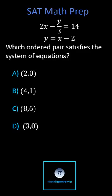Which ordered pair satisfies the system of equations? This means which ordered pair satisfies both the first and second equation. Recall each ordered pair is in the form of x comma y.